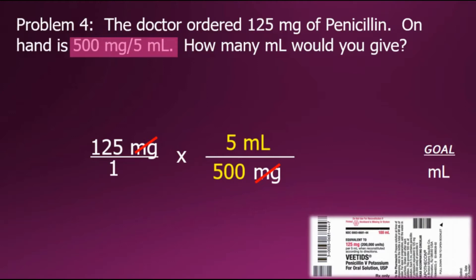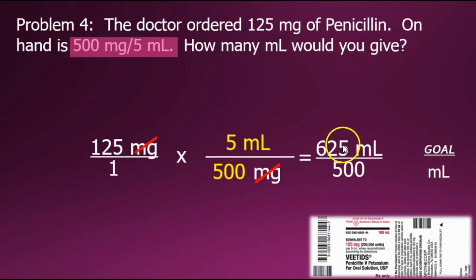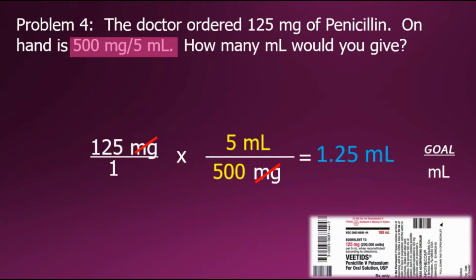Next, we multiply the numerators together to create the new numerator and multiply the denominators to create the new denominator. We then perform the implied division: 625 divided by 500 gives a simplified answer of 1.25 milliliters.